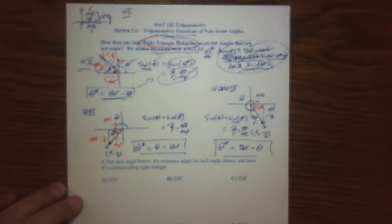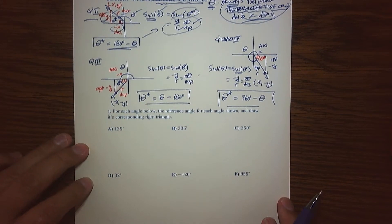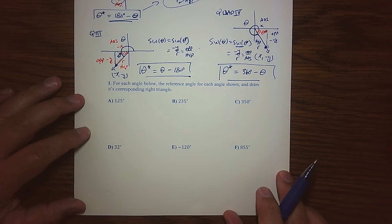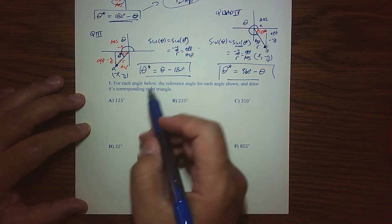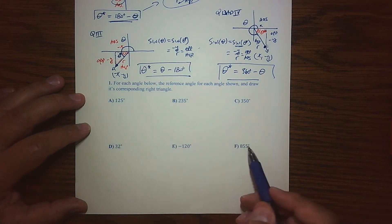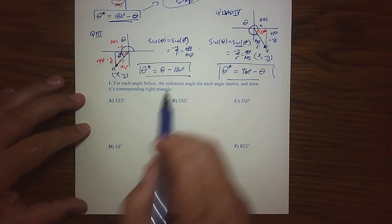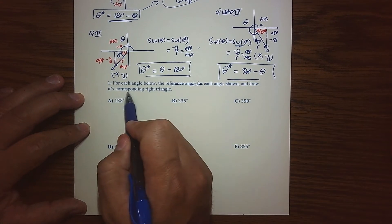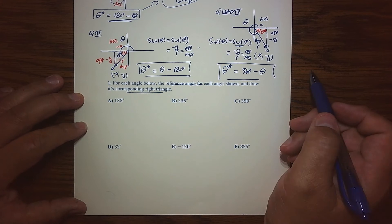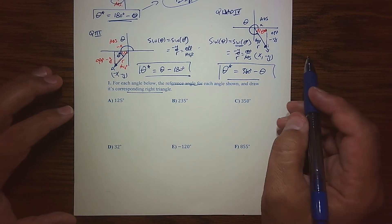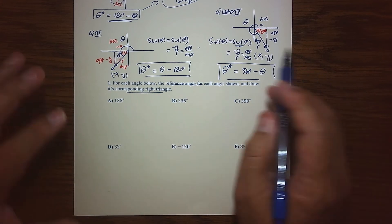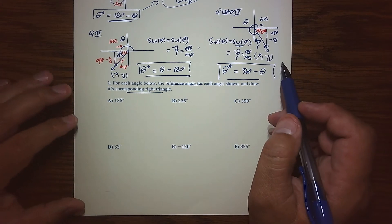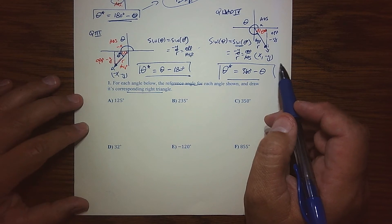Okay, you guys, so as promised, what we're going to do is go ahead and for each angle that you see here below, we're going to find the reference angle and we're going to draw the corresponding right triangle. This is what I want to see from you guys whenever you're referring to the right triangle definition.